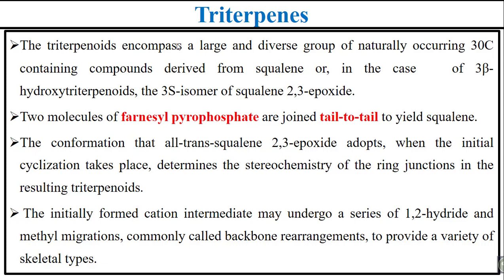Terpenoids encompass a large and diverse group of naturally occurring 30 carbon-containing compounds derived from squalene. Squalene can be found in the case of 3-beta-hydroxy triterpenoids or 3S isomers of squalene 2,3-epoxide. The isoprene unit by default has five carbons, therefore in the case of triterpenoids the number of carbons increases to 30.